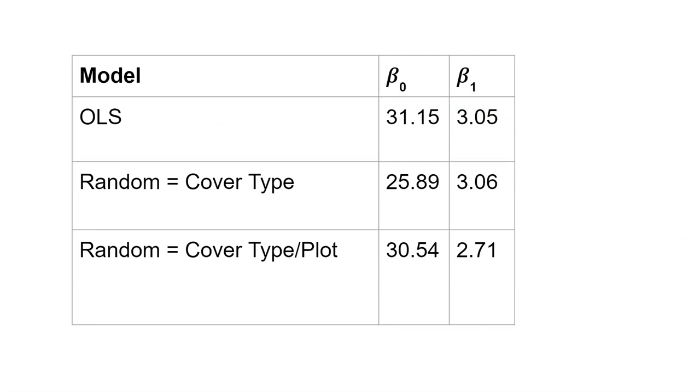Here's another short table comparing the differences in the beta_0 and beta_1 values for the three different kinds of models that we fit to the data. The ordinary least squares model had the highest value for the intercept. The slopes for the random cover type variable and the OLS model were about the same. But when we included the random effect for the plot nested within the cover type, our value for the slope was quite a bit smaller than for the other models.